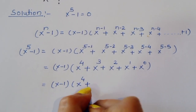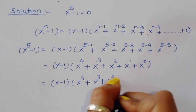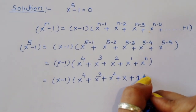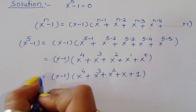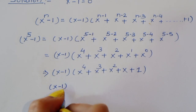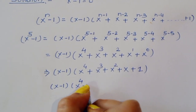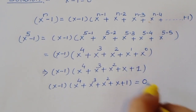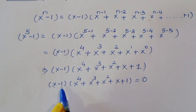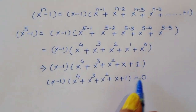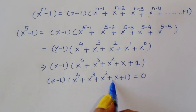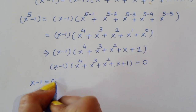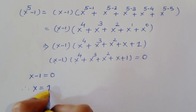So we get (x - 1)(x^4 + x^3 + x^2 + x + 1) = 0, since x^0 = 1. Now we have two equations: x - 1 = 0, and x^4 + x^3 + x^2 + x + 1 = 0. From the first equation, x = 1. This is the first value of x.